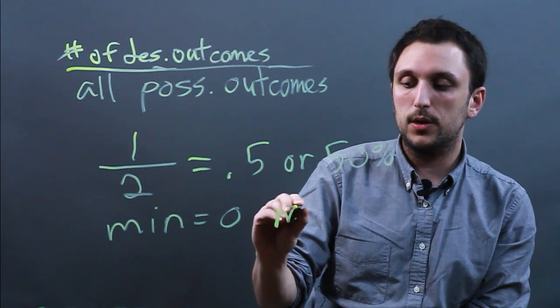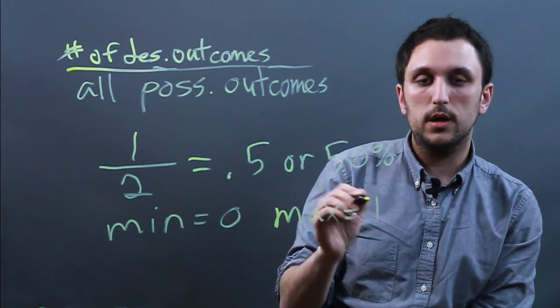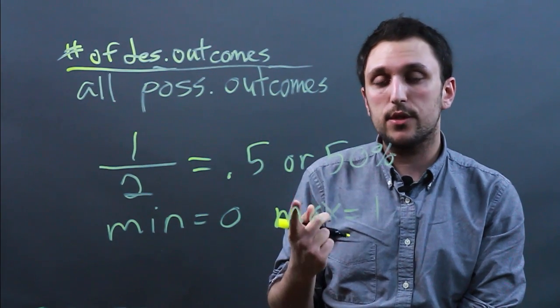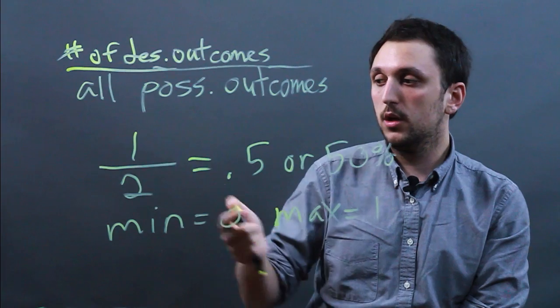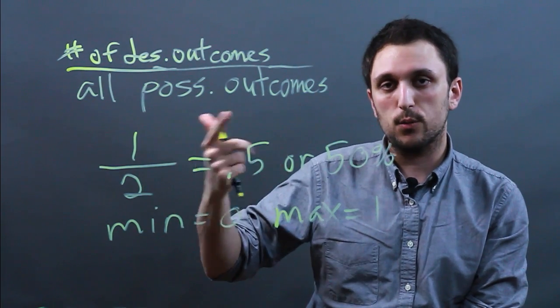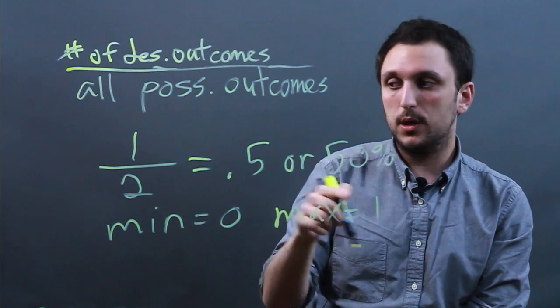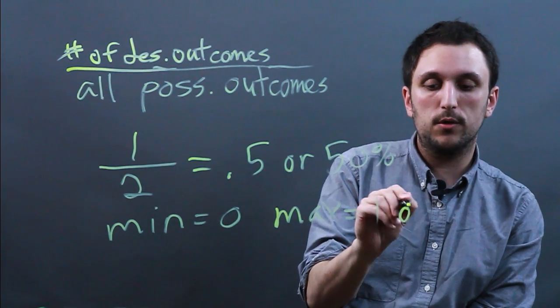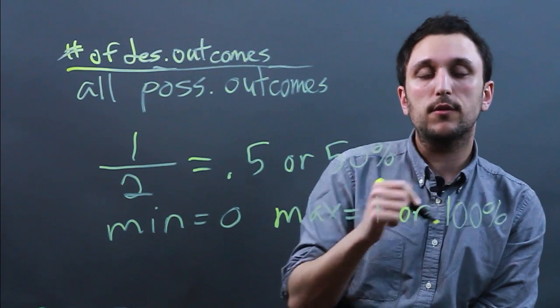Now, the maximum probability is one. So, say you're flipping the coin and you want to land either heads or tails. Well, you have two chances because you can get either one out of two. So, it would be one or 100%.